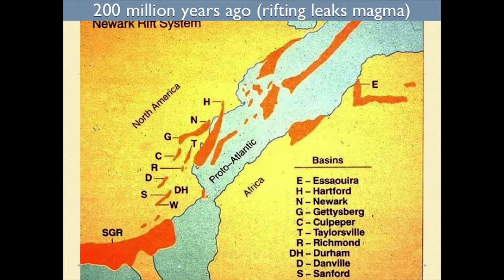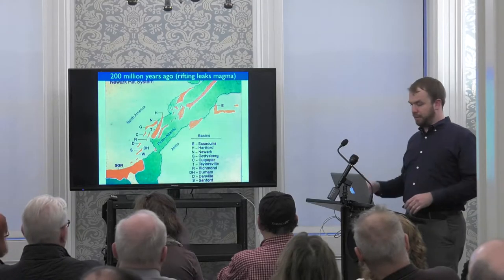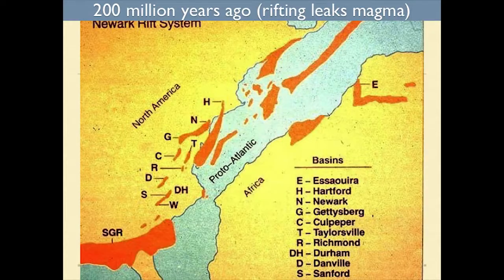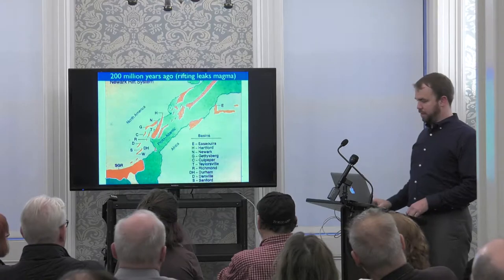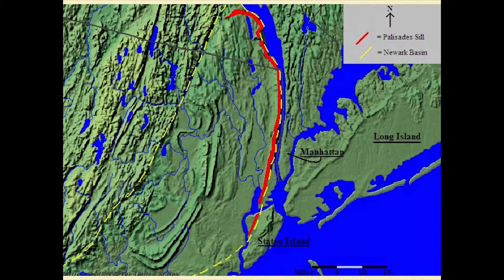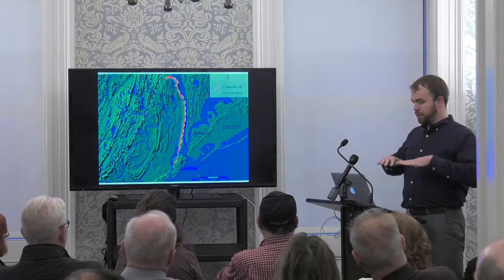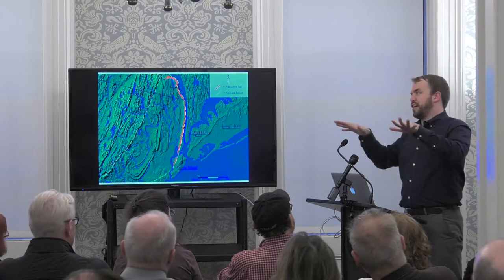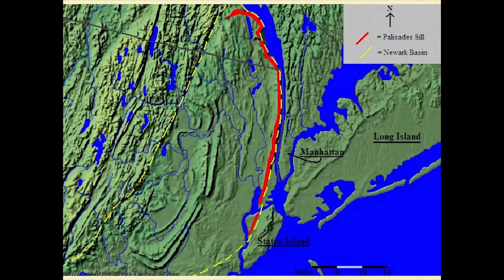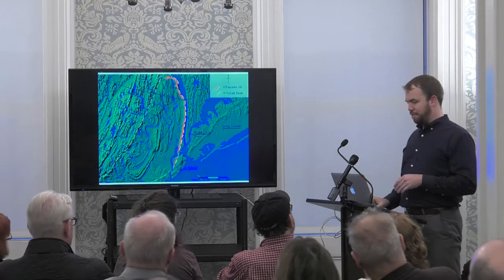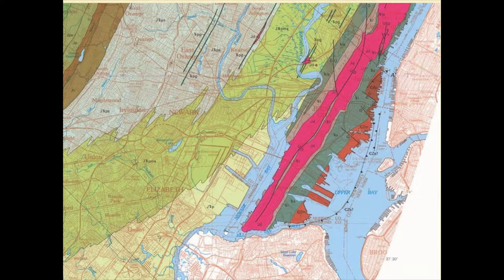A feature of all that rifting is that sometimes magma leaks out. About 200 million years ago, catastrophic amounts of magma came out, causing one of Earth's great extinction events — the Central Atlantic Magmatic Province (CAMP). All those orange areas on the map released magma at some time. The magma around here was released around 201 million years ago, which we can see in the Palisades. The Palisades were an intrusion of magma that started from the Earth's mantle into the rocks of the Newark Basin, found a layer, and squeezed out.